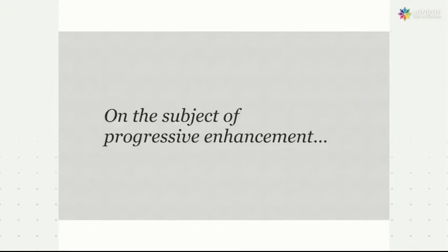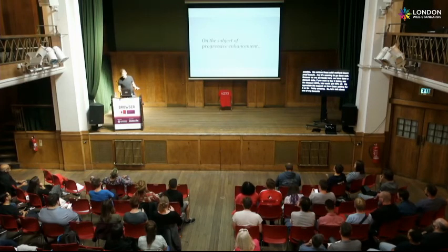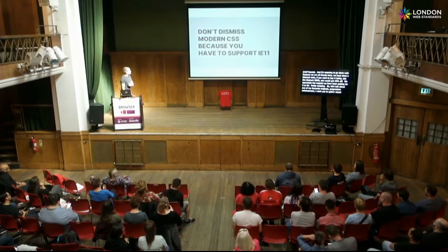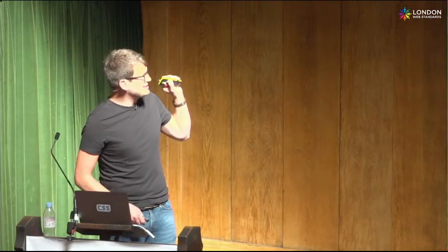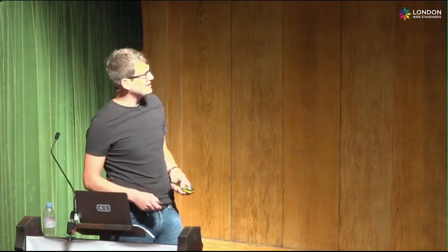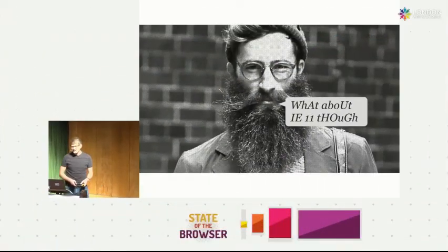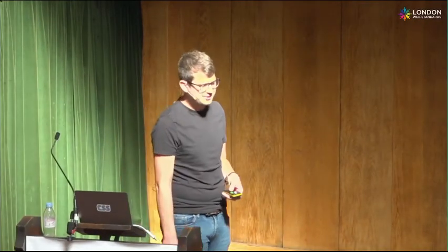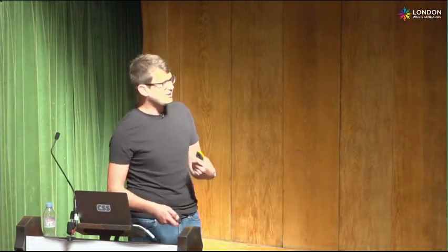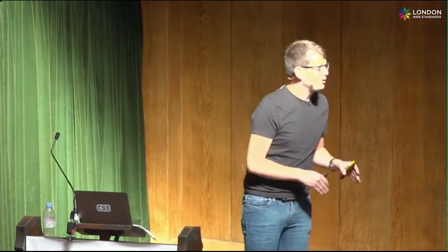Let's talk about progressive enhancement — gather round and take a knee. Don't dismiss modern CSS just because you have to support IE11. When someone shares something really cool on Twitter and someone turns up saying 'what about IE11 though?' — stop trying to pixel-perfect your designs and instead use progressive enhancement to create a sensible default that automatically improves where support is available. Uncle Bruce illustrated it perfectly this morning — his site rendered beautifully in the first ever browser. We should be targeting the least powerful devices and enhancing the experience where support is available.